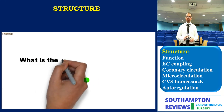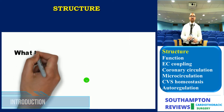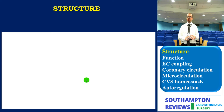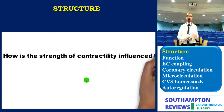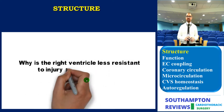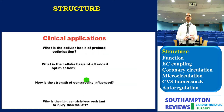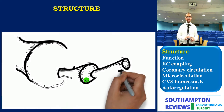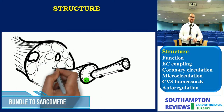By the end of this chapter, you should be able to answer a few questions. For instance: what is the cellular basis of preload optimization? What is the cellular basis of afterload optimization? How is contractility affected by various factors? Why is the right ventricle more — or less — resistant to injury than the left ventricle? Let's start with the basic stuff first.